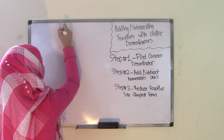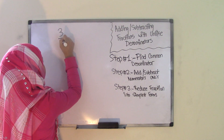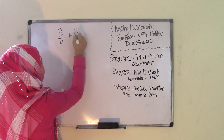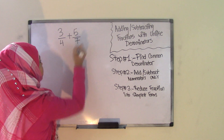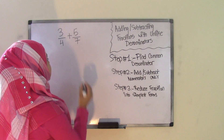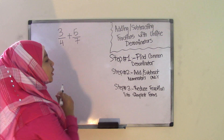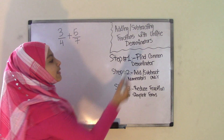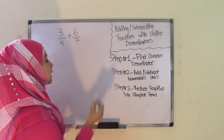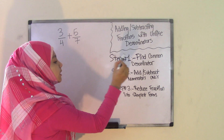So let's say we have the problem 3 fourths plus 5 over 7. These are my two fractions, and as you can see, my denominators — which are 4 and 7 — are different, which means they are unlike denominators. So according to the steps, step one is find a common denominator.